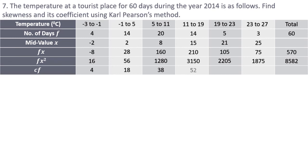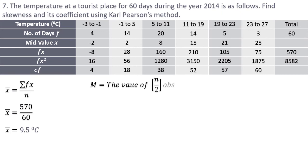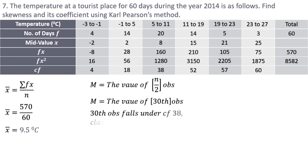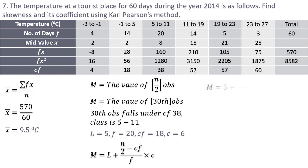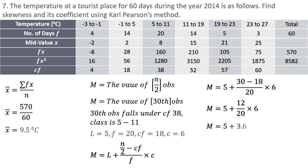The mean = Σfx / n = 570 / 60 = 9.5 degrees Celsius. For median, n/2 = 60/2 = 30th observation. From the cf column, the 30th observation falls under cf 38, which is the class 5 to 11. These classes are exclusive, so no adjustment needed. The lower limit is 5, frequency is 20, cf before this class is 18, and class length is 6. Median = 5 + [(30 − 18) / 20] × 6 = 5 + 3.6 = 8.6 degrees Celsius.